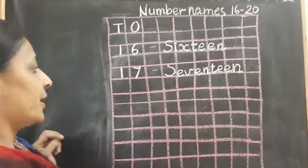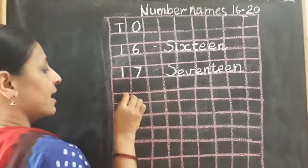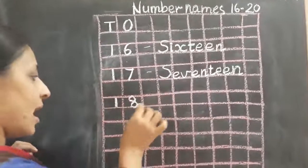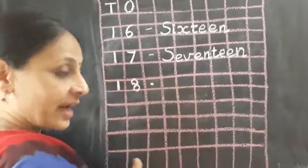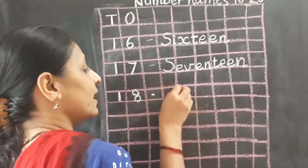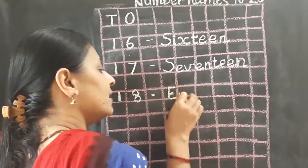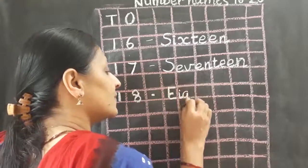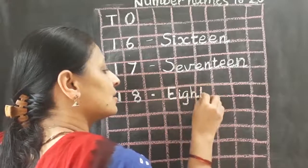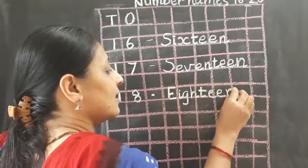Now children, after writing 17, again I will leave a box and write 18. Now we will write the number name of 18. So the spelling of 18 is E, I, G, H, T, E, E, N.